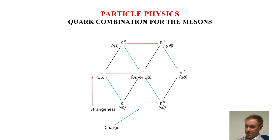And charge increases across from minus nought to plus across the bottom. So for instance, the simple one is pi nought, which is U U bar or D D bar. So the charge is cancelled out, so that's got zero charge.